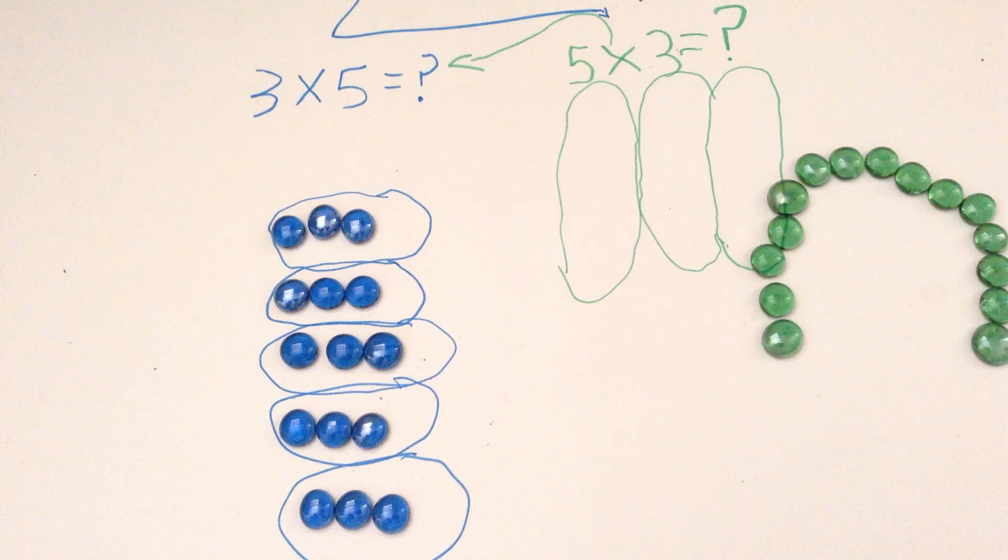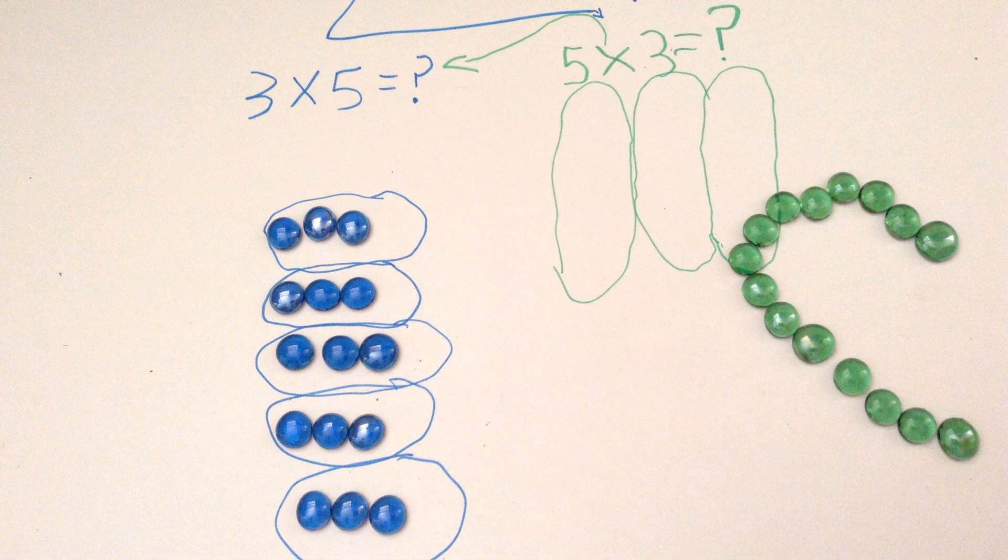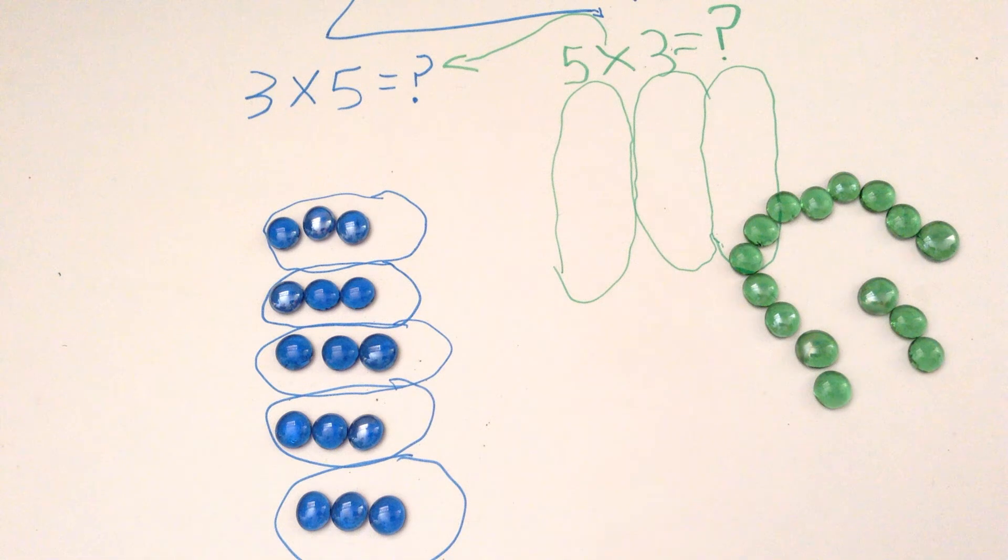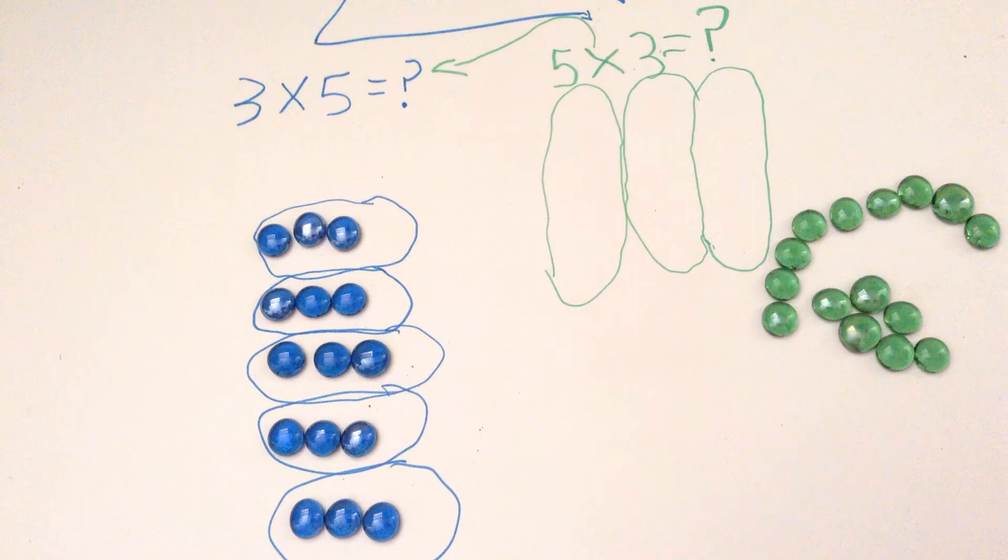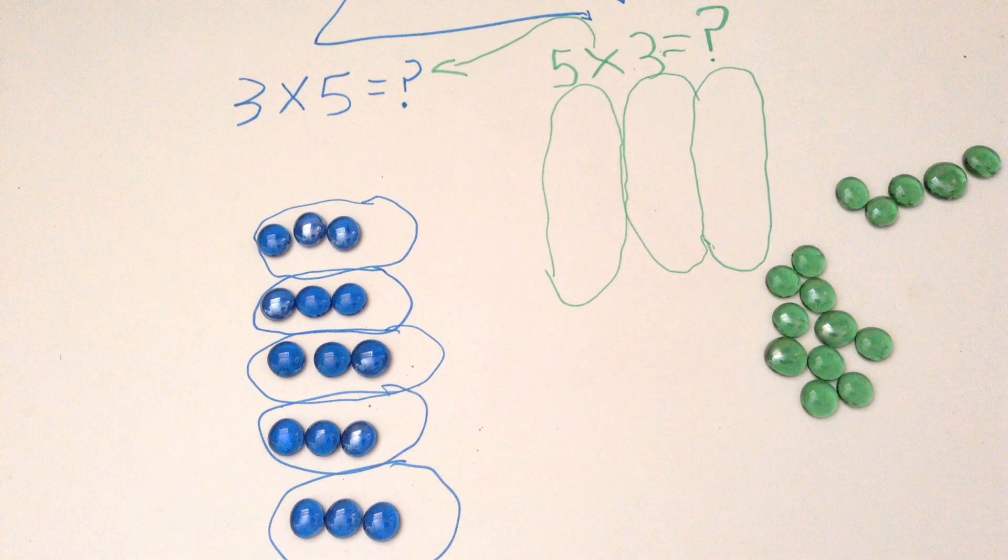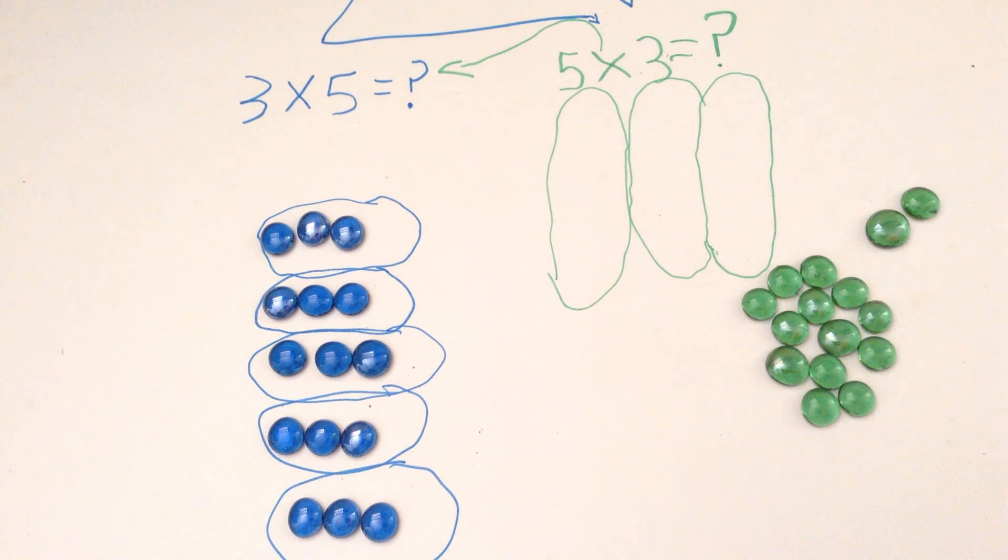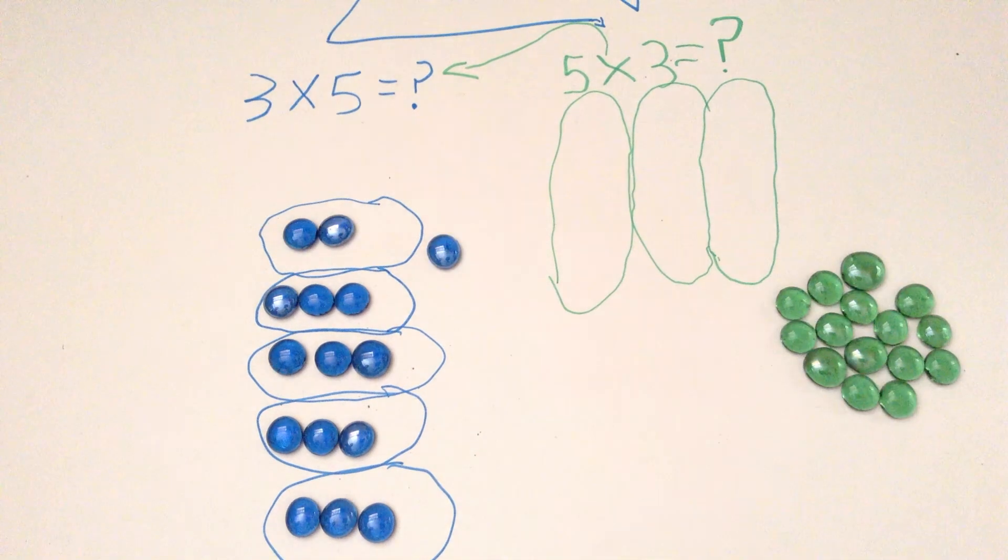And they're going to go in a group. One, two, three, four, five, six, seven, eight, nine, ten, eleven, twelve, thirteen, fourteen, fifteen.